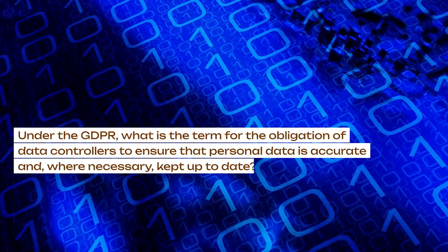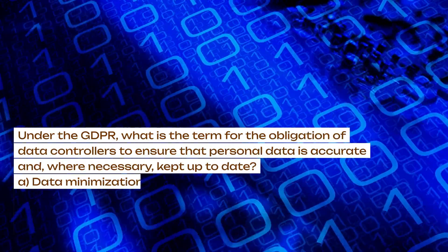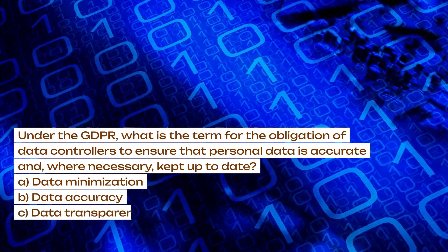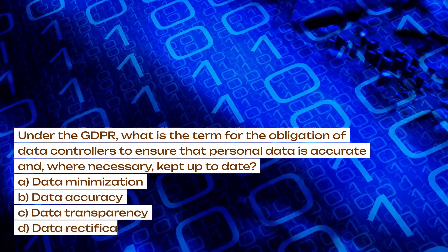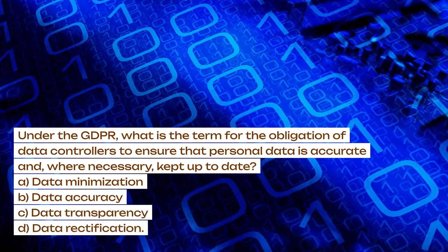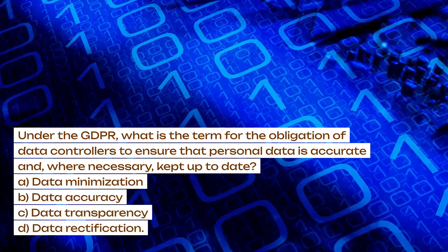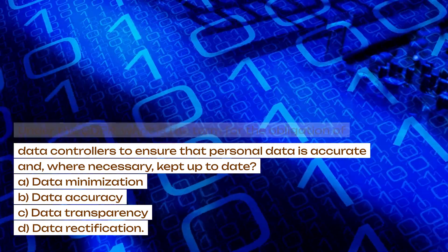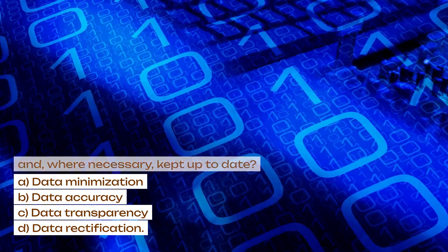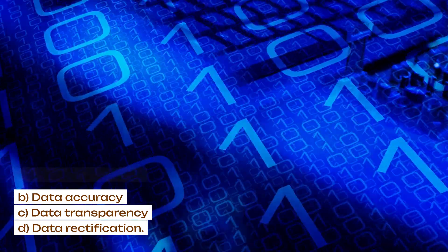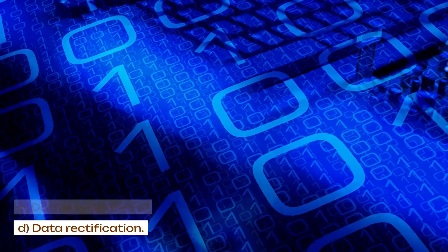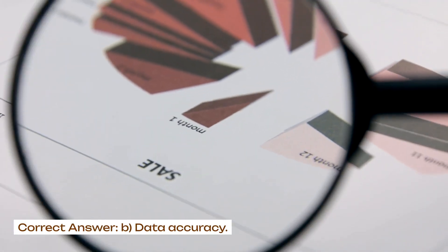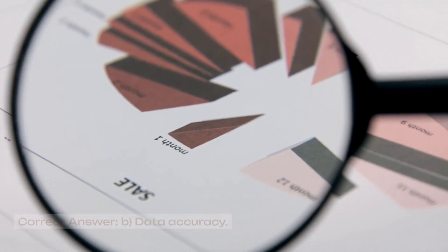Under the GDPR, what is the term for the obligation of data controllers to ensure that personal data is accurate and, where necessary, kept up to date? A. Data minimization. B. Data accuracy. C. Data transparency. D. Data rectification. Correct answer: B. Data accuracy.